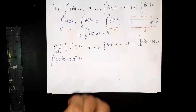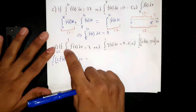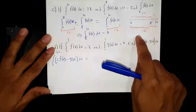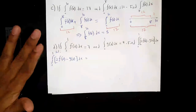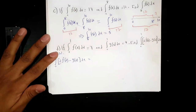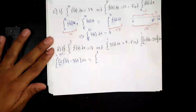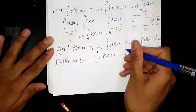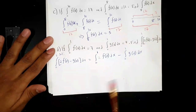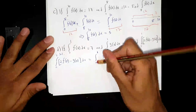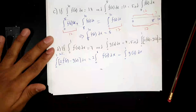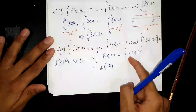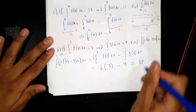Part D: given ∫₀¹ f(x) dx = 7 and ∫₀¹ g(x) dx = 4, find ∫₀¹ [2f(x) - g(x)] dx. By properties: = 2∫₀¹ f(x) dx - ∫₀¹ g(x) dx = 2(7) - 4 = 14 - 4 = 10.